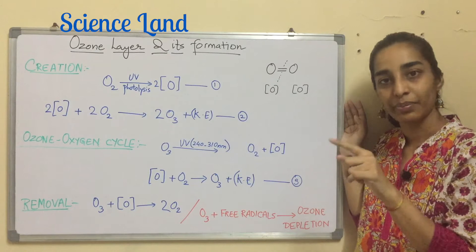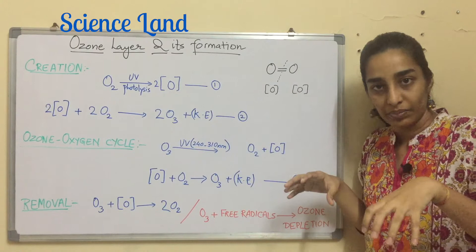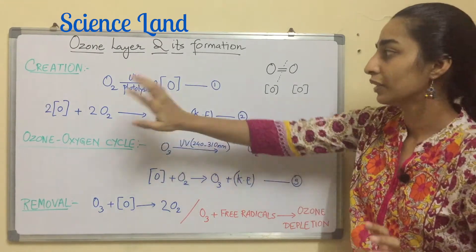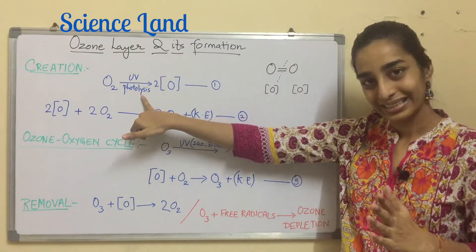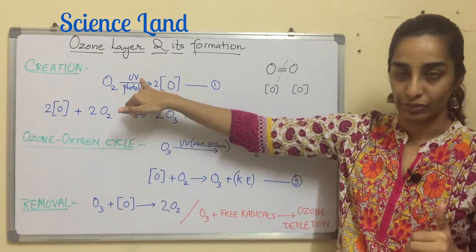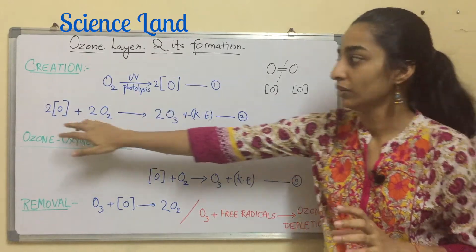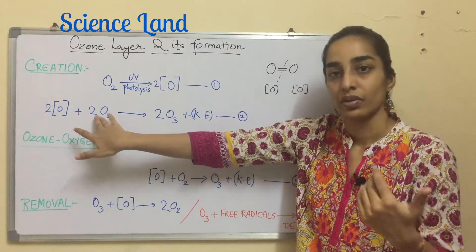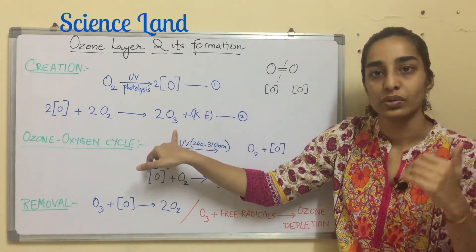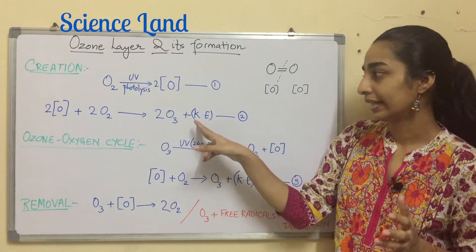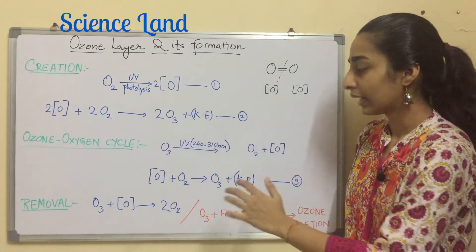So the first step is creation. A molecule of oxygen is photolyzed, broken down in presence of UV radiation to give two nascent oxygens. These two nascent oxygen will further combine with two molecules of oxygen to produce two ozone molecules and the kinetic energy is produced. So the ozone molecule is formed in the first step.